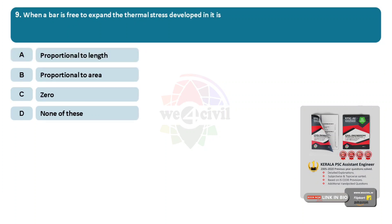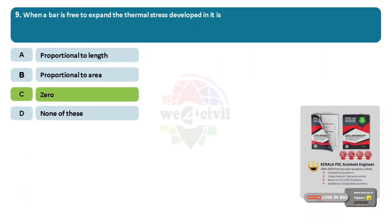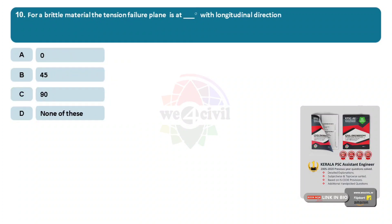When a bar is free to expand, the thermal stress developed in it is? Options: Option A, proportional to length. Option B, proportional to area. Option C, 0. Option D, none of these. Answer is Option C, 0. For a brittle material, the tension failure plane is at dash degrees with longitudinal direction. Option A, 0. Option B, 45. Option C, 90. Option D, none of these. Answer is Option B, 45 degrees.